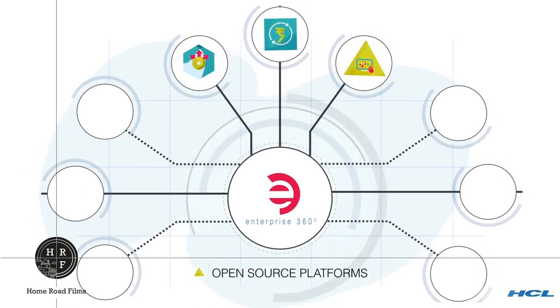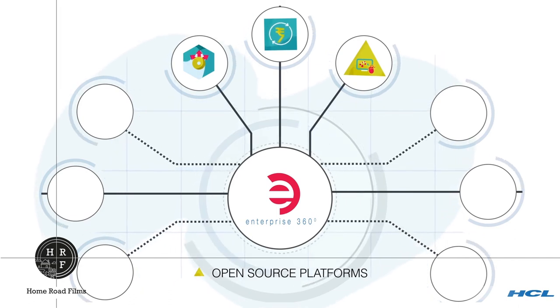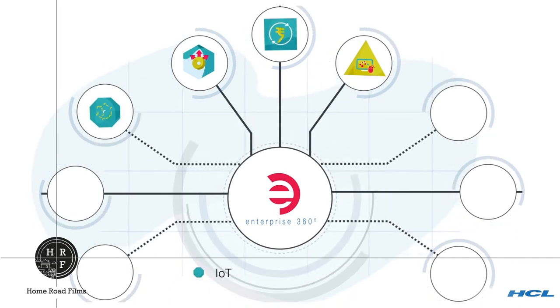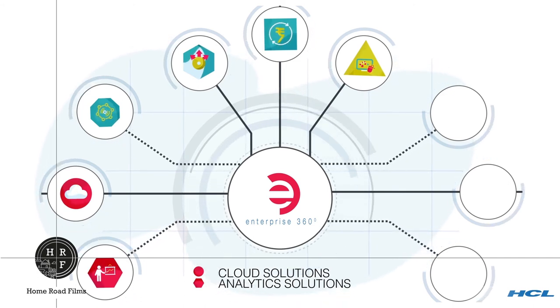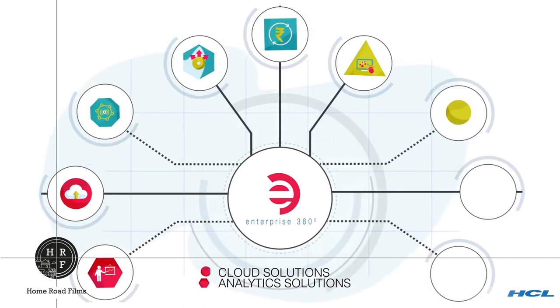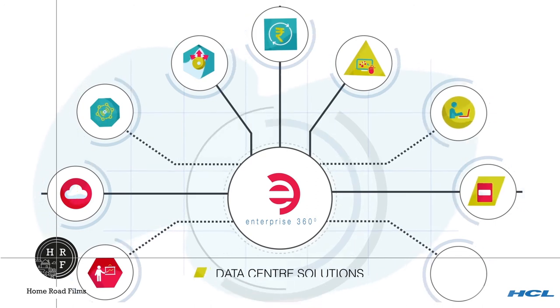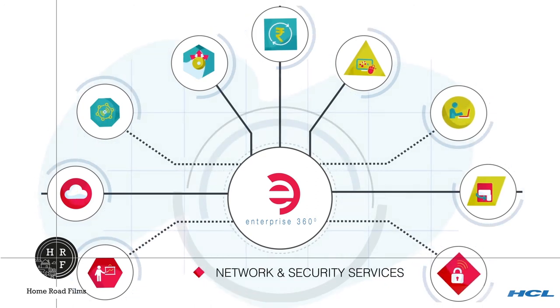The six service towers are split into three towers: the emerging digital enterprise consisting of IoT, cloud and analytics, and the remaining three towers focus on the existing enterprise IT infrastructure consisting of workplace solutions, data center solutions, and network and security services.